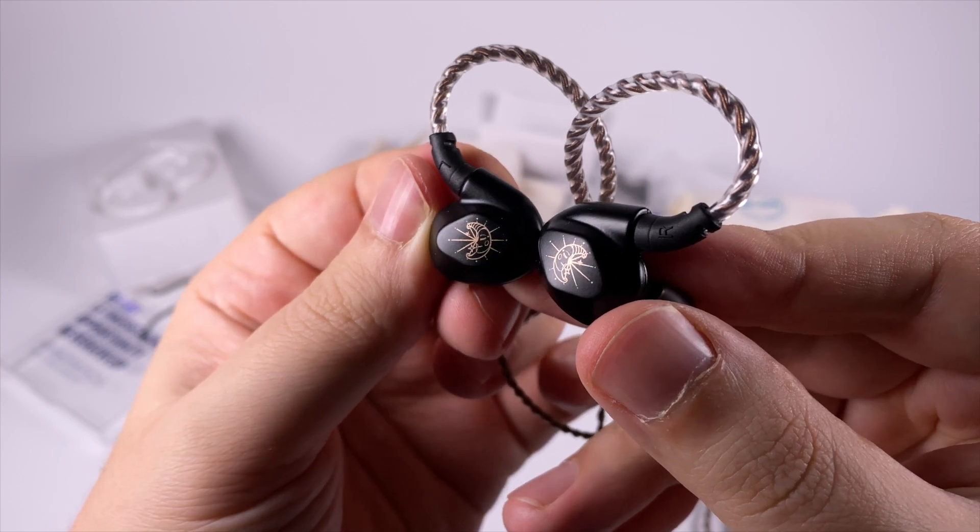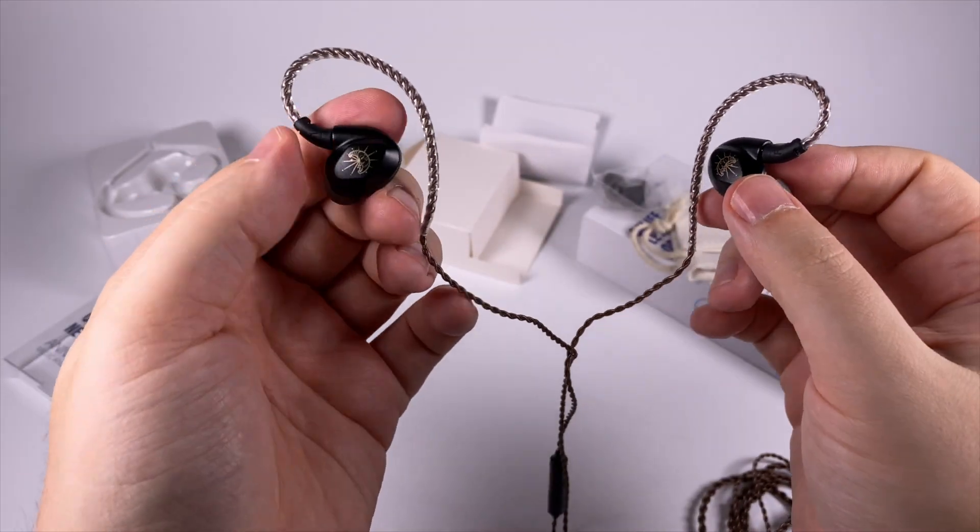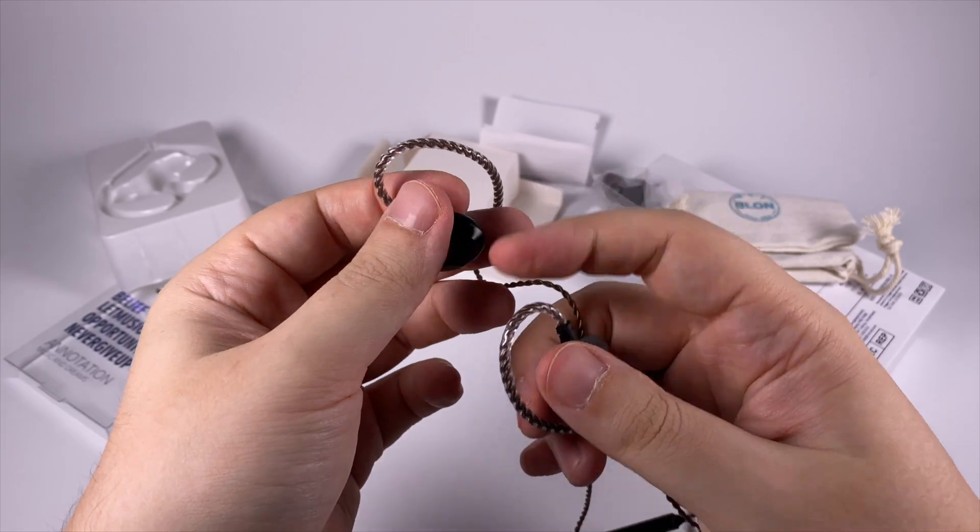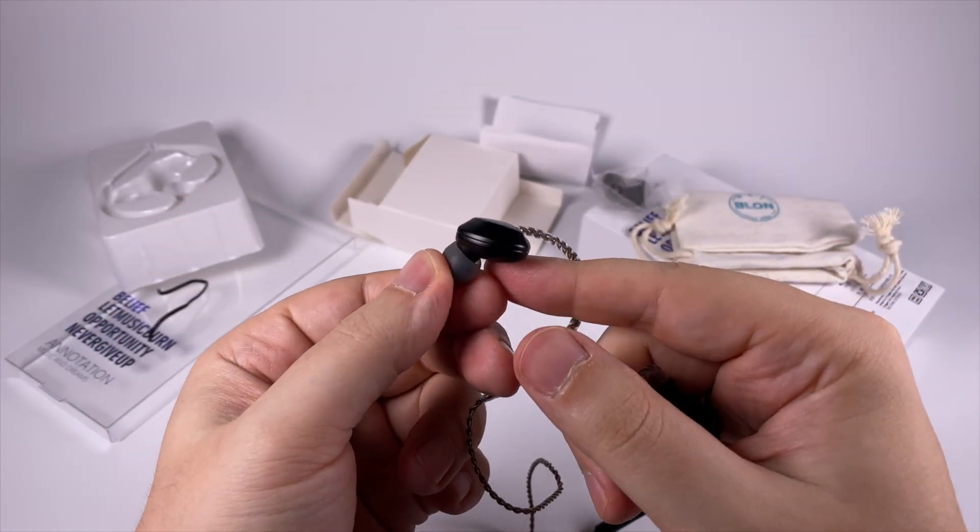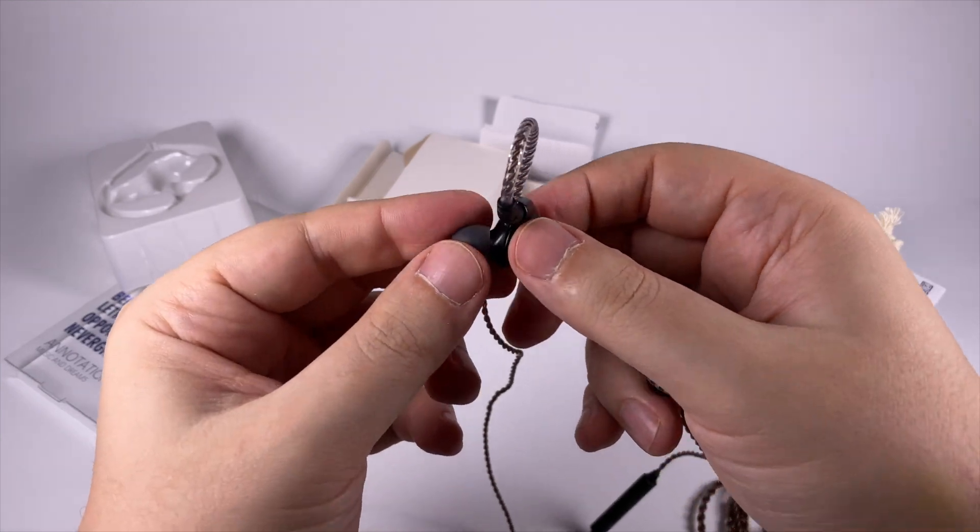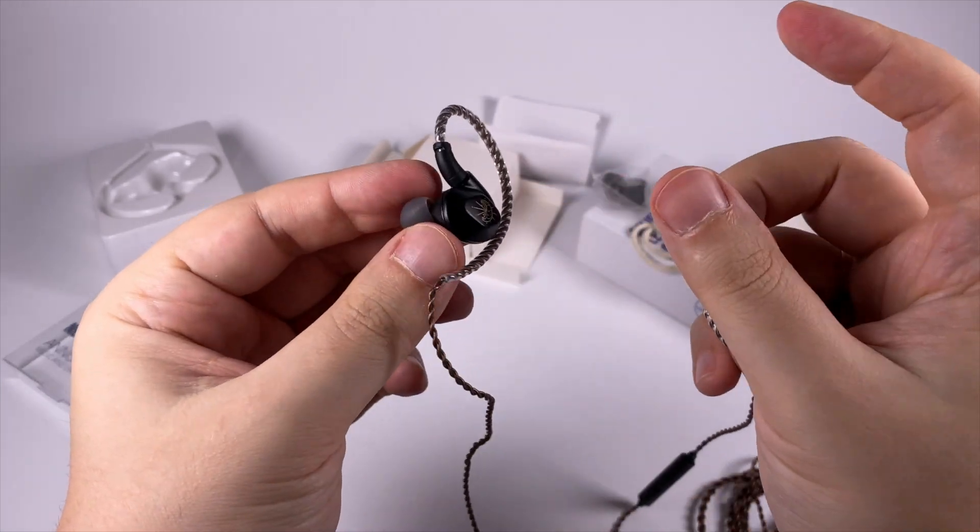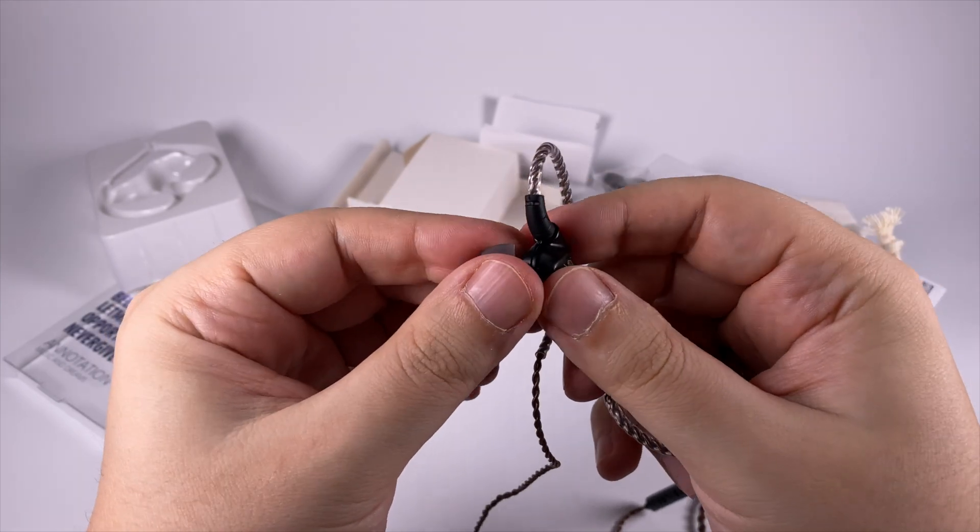They even added some kind of images on the face plates. It's probably moon with stars, I'm not sure - another mystery here. In general, shells are built really nicely. Like 10 years ago you'd have to pay about 100 dollars alone for such shells, so technologies of manufacturing became more affordable.